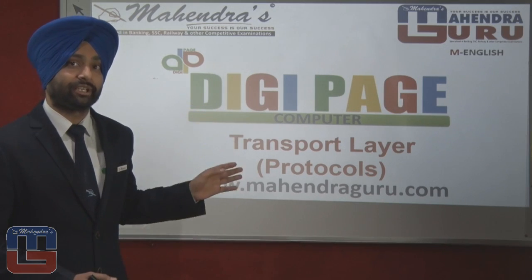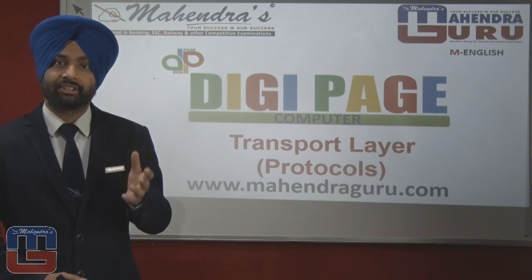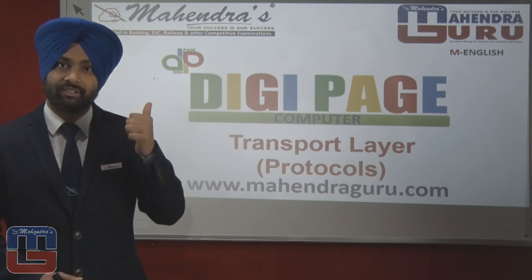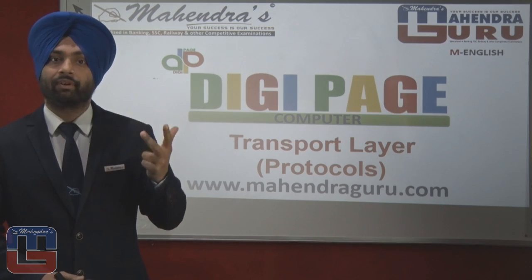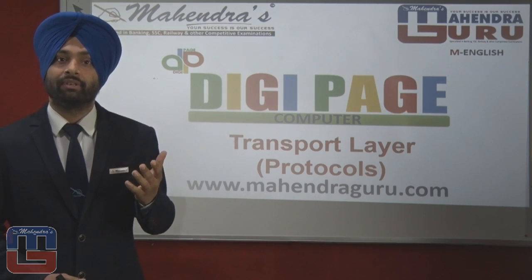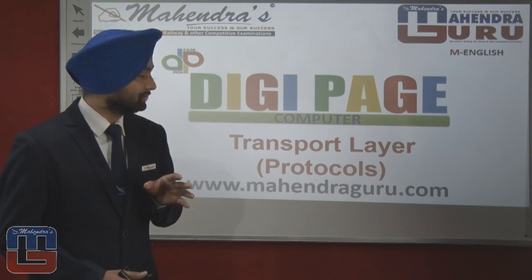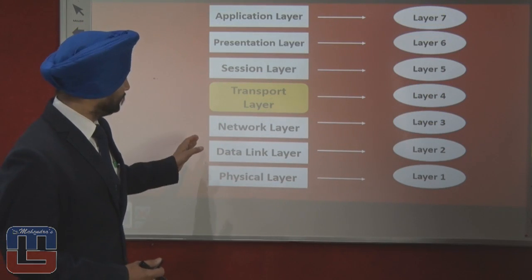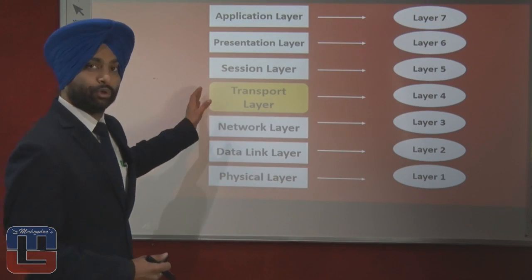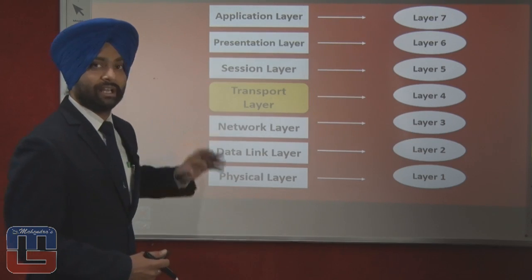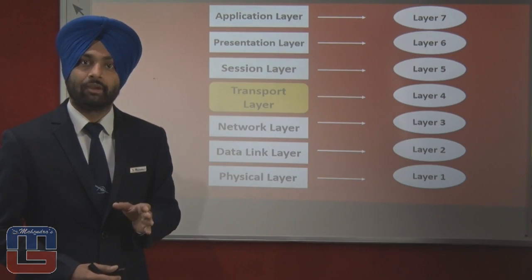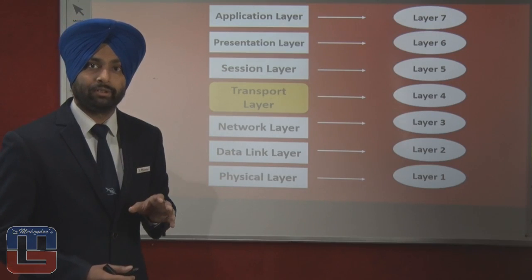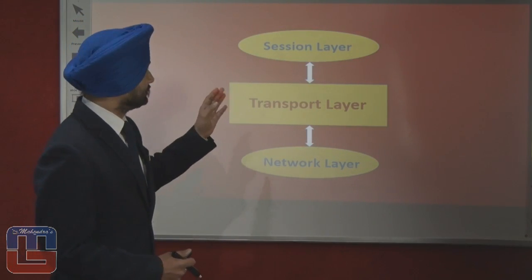A question: what number is the transport layer located on? The OSI model layers from bottom to top are: first physical, second data link, third network, and then the transport layer. Let's have the figure view — physical, data link, network, transport, session, presentation, and application. We follow the bottom-to-top approach.